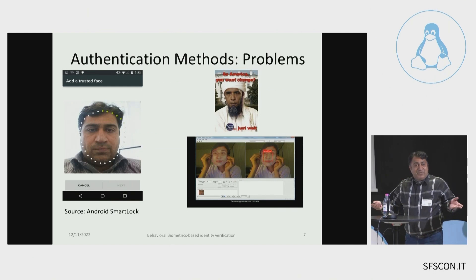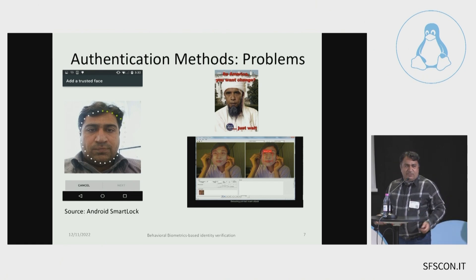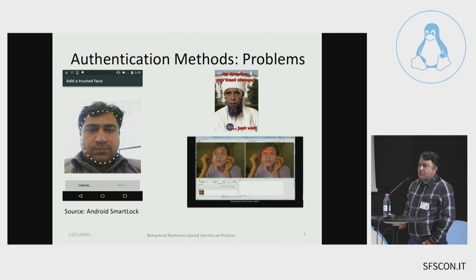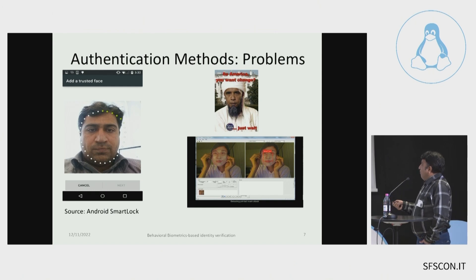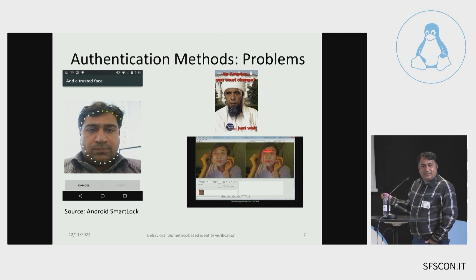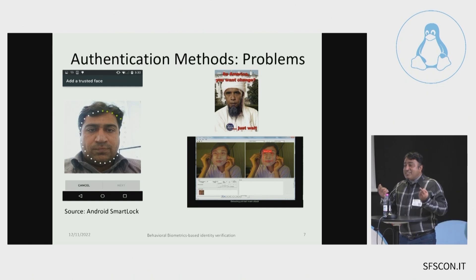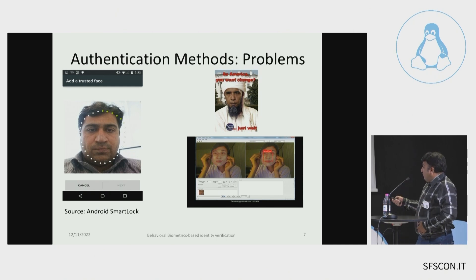Then we have other solutions — why should we use these classical solutions? We have face recognition systems, Android Smart Lock, which authenticates a person based on facial attributes. But face recognition is vulnerable to attacks — it's very easy to find the face of a targeted person because we leave our data everywhere: on Facebook, on LinkedIn, everywhere.